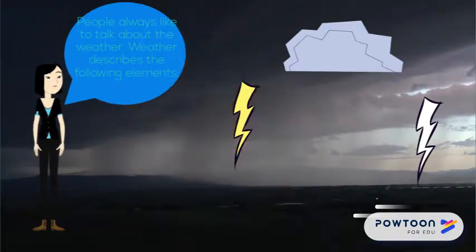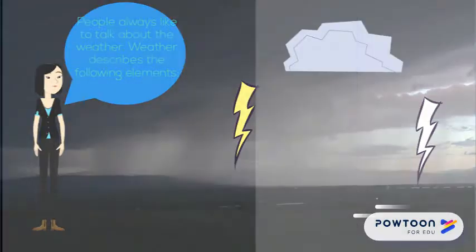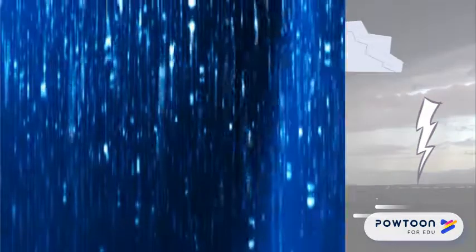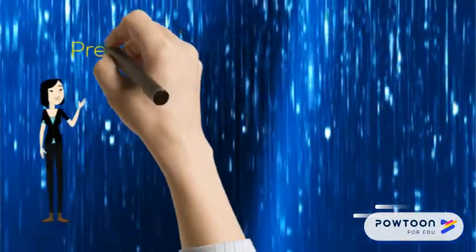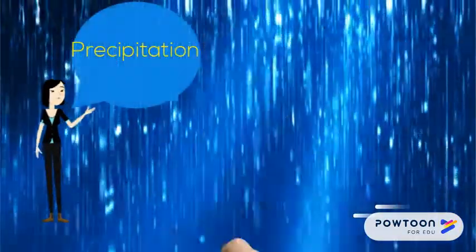We can use the following words to describe the weather: hot, cold, warm, cool, wet, dry, sunny, rainy, cloudy, as well as windy.